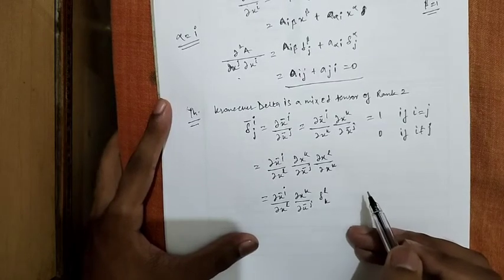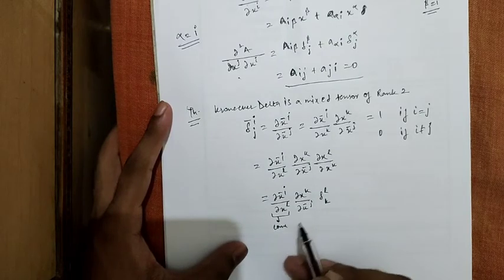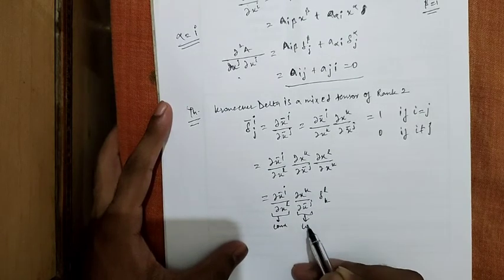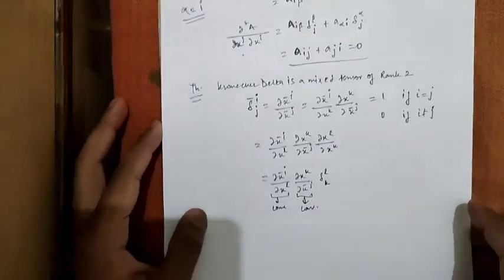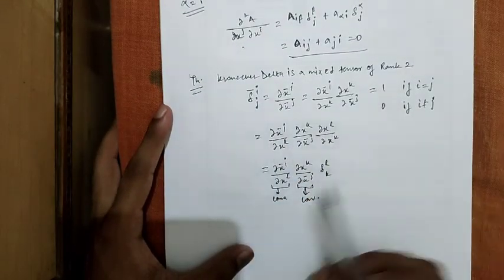Now, we can see that this is a contravariant component, this is a covariant component, which makes this Kronecker delta of second order a mixed tensor.